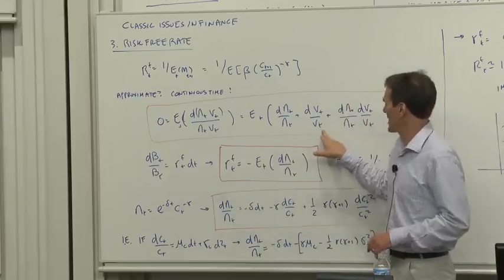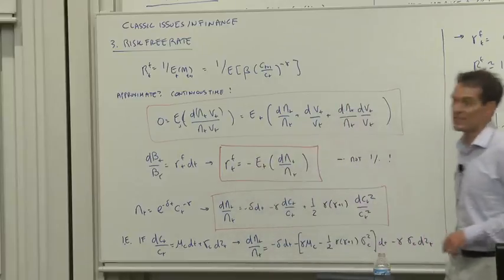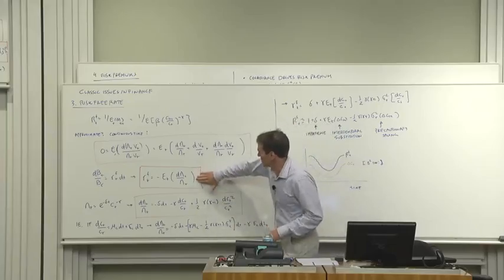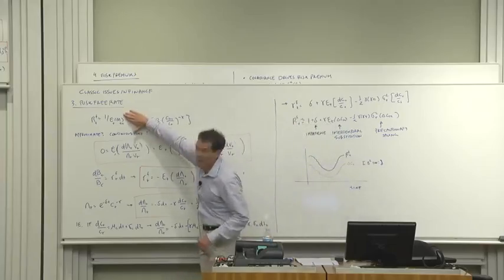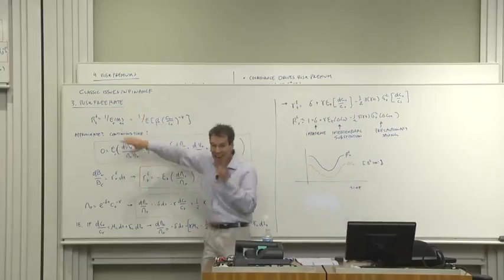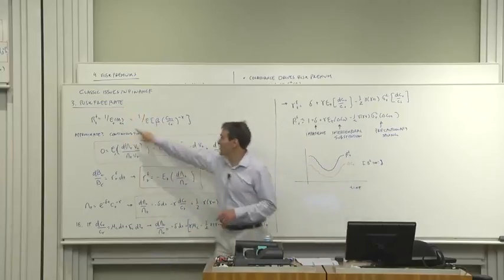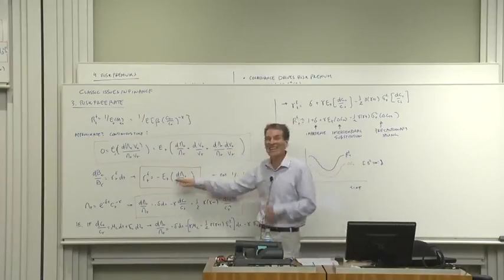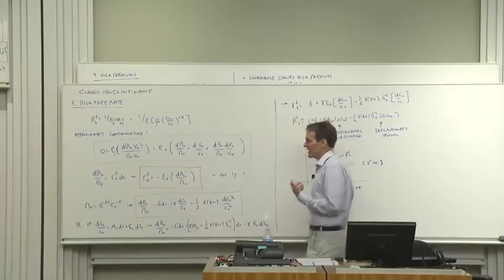Therefore, rf, that term, becomes minus E of d lambda over lambda. You can see clearly how that equation is the continuous time counterpart of that equation, and that you get a minus rather than a 1 over, which is the simplification you get out of Ito's lemma and continuous time.